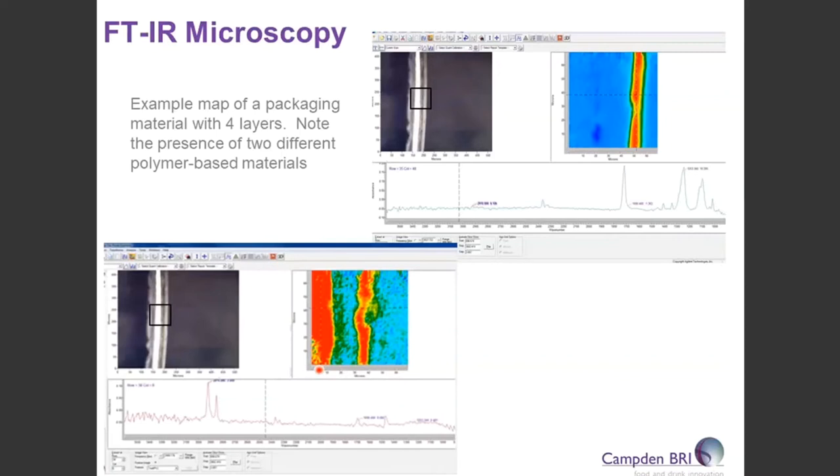From this, we can then build up the picture. You'd sort of overlay these heat maps and we could see that we have one layer of PET here, we then have our PE, our optically dense layer, and again, another PE.